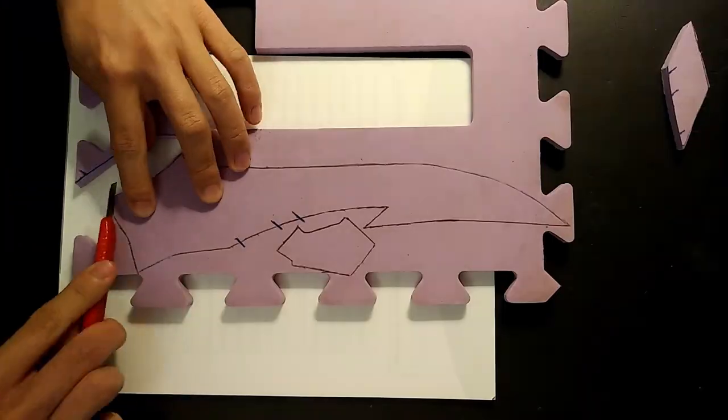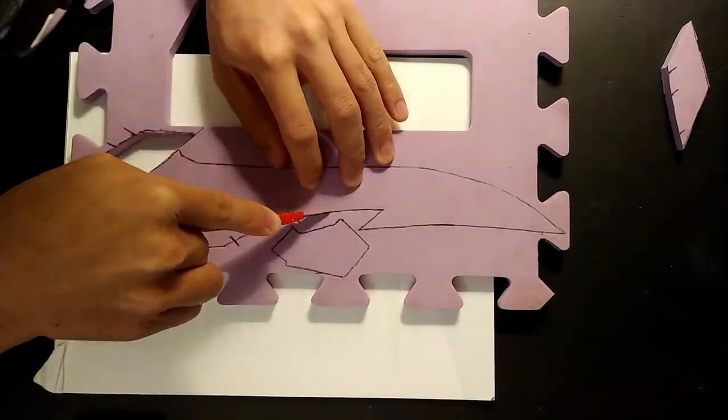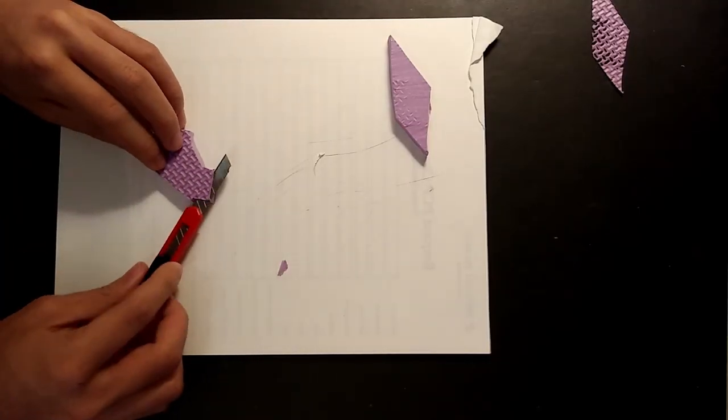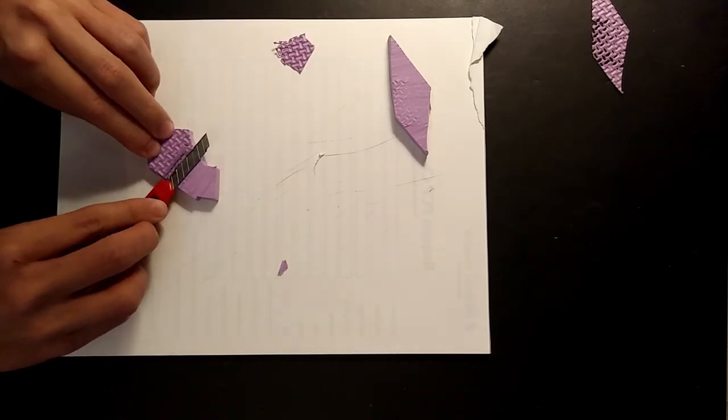Then just transfer the templates to foam and cut it out. For all the little pieces, we'll want to cut off the textured side so that both sides will be kind of flat.